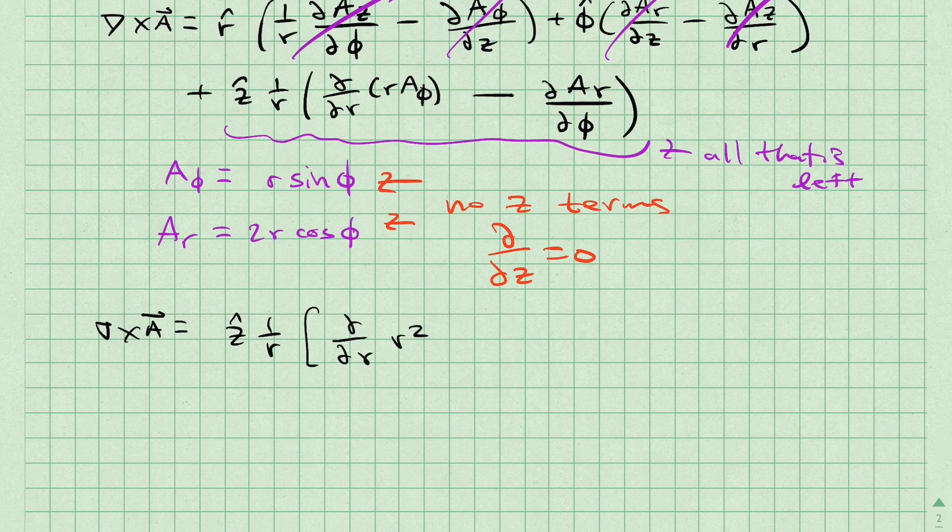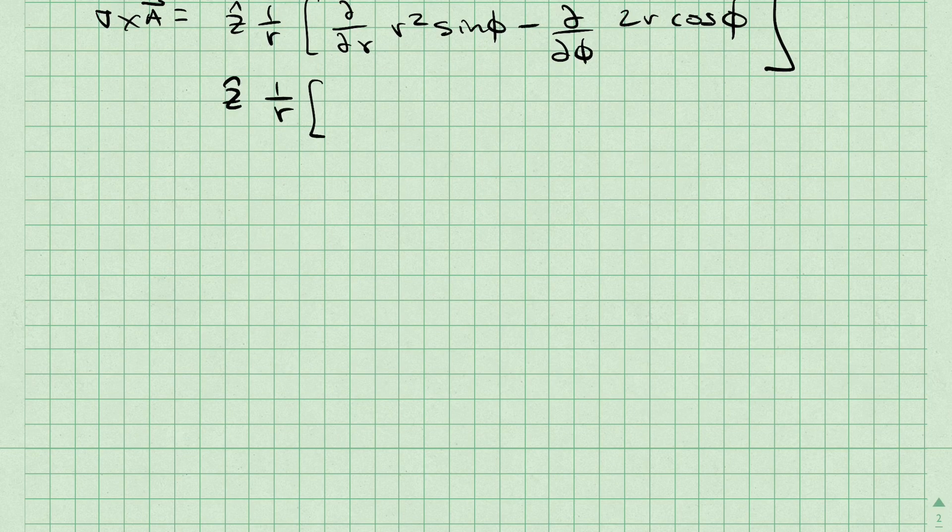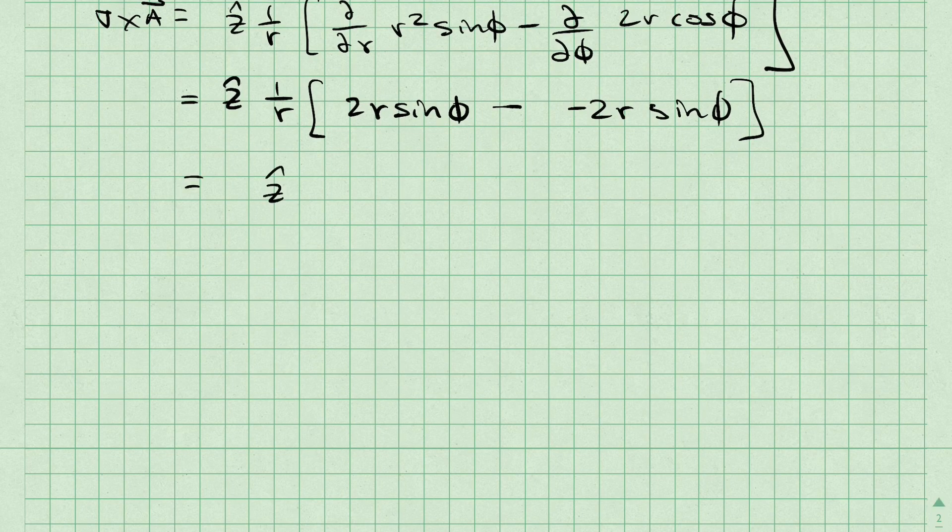Let's go ahead and calculate that. The partial derivative with respect to r of r-squared sine phi is just 2r sine phi, and the partial derivative of 2r cosine phi with respect to phi is negative 2r sine phi. Taking the subtraction of these two terms and dividing by r, we get our answer, which is z-hat 4 sine phi.